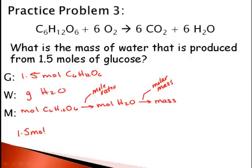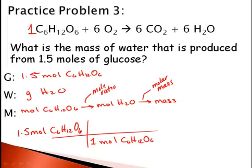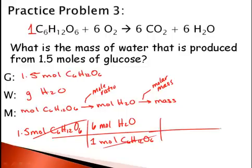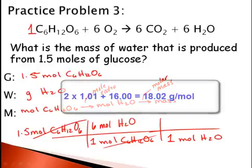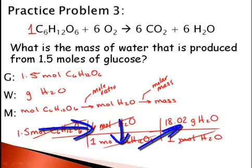So 1.5 moles of C6H12O6. From our balanced equation, we see that there is 1 mole of C6H12O6 and 6 moles of water. Moles of C6H12O6 cancel out, leaving us with moles of H2O. Now we use our molar mass — molar mass is always to 1 mole, so we put 1 mole on the bottom to cancel. The molar mass of water is 18.02 grams. So 1.5 times 6 divided by 1 times 18.02 divided by 1 is 162.18 grams.